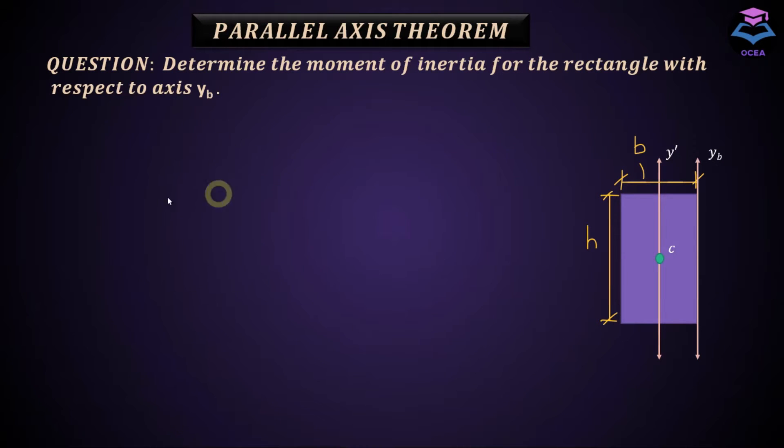So I'm going to continue today's lecture from here. If you know how to solve this problem, you can just skip this question and move to the next topic. So it says that, determine the moment of inertia for the rectangle with respect to axis yb.